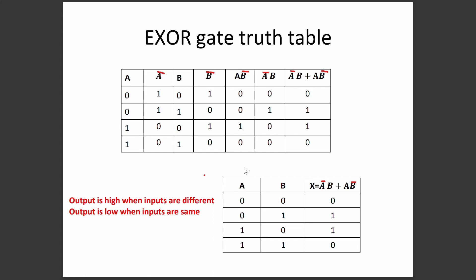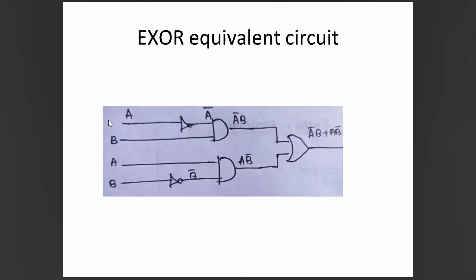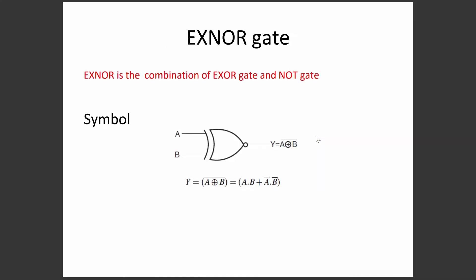The expression for A XOR B is A-bar·B + A·B-bar. The equivalent circuit uses basic gates: one NOT gate for A-bar, one NOT gate for B-bar, one AND gate to compute A-bar·B, one AND gate to compute A·B-bar, and an OR gate to add the two terms.